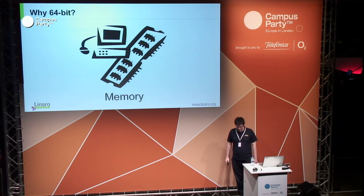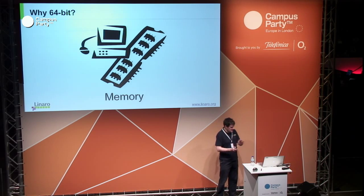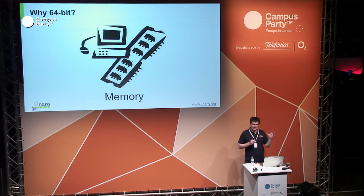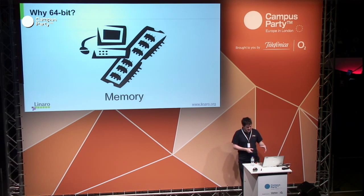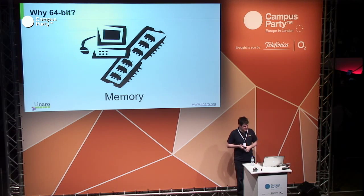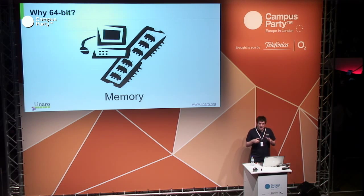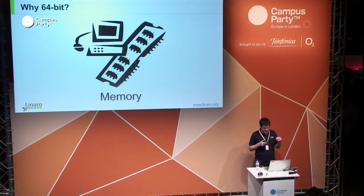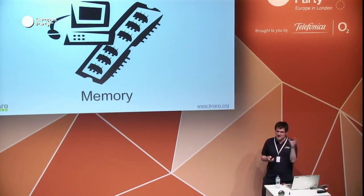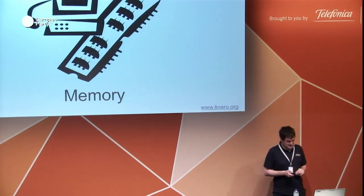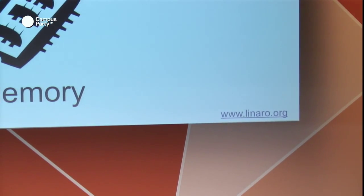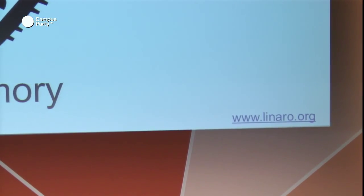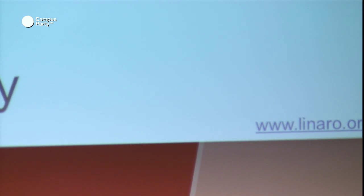Why 64-bit? There's one reason: memory. We want to access more than 4 gigabytes of memory, which is what 32 bits gives you. 64-bit allows much more memory to be accessed than that, although usually not the full 2 to the 64 bytes — architecture designs normally limit this to 40 or 48 bits of addressing. So this is not about performance. But moving up to 64 bits from 32 bits has consequences, which I'm going to look at now.